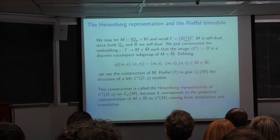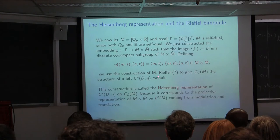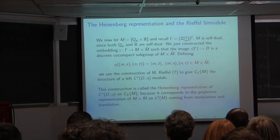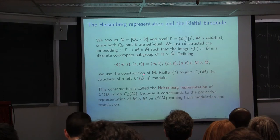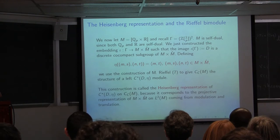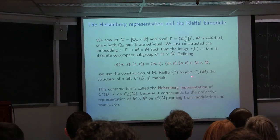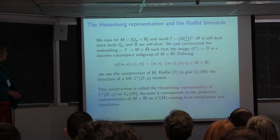Because Q_p × R is a self-dual group, this turned out to be a perfect setting to use Rieffel's work on Heisenberg representations. Taking M to be the abelian group Q_p × R, since it's self-dual you can define modulation and translation operators on continuous functions with compact support on M. Rieffel developed a whole theory of such actions to obtain Morita equivalences, originally for higher-dimensional non-commutative tori, but it holds in general for closed subgroups — and so it holds in this case.